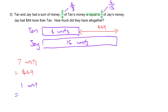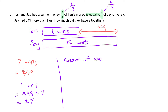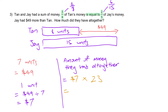One unit equals $49 divided by 7, which is $7. How much did they have altogether? They have 8 plus 15 equals 23 units in total. So the total amount of money they had altogether is 23 times $7, which equals $140 plus $21, giving $161.